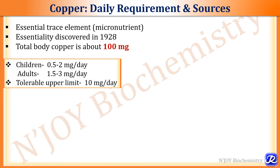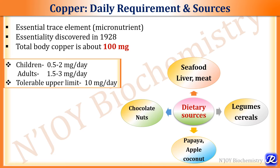In children, the daily requirement is 0.5 to 2 mg per day. In adults, it is 1.5 to 3 mg per day. The tolerable upper limit is 10 mg per day. Various dietary sources of copper are seafood, liver, meat, legumes, cereals, papaya, apple, coconut, chocolate, and nuts.